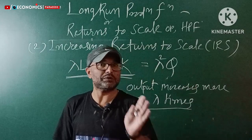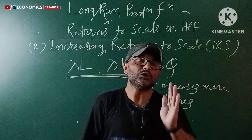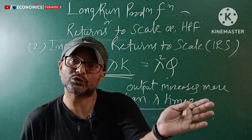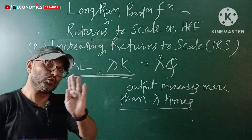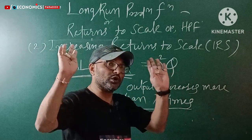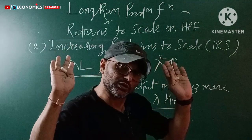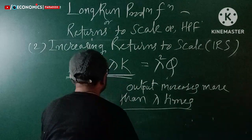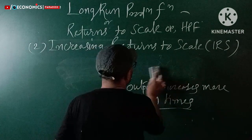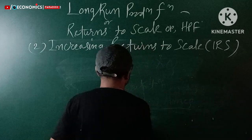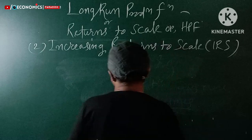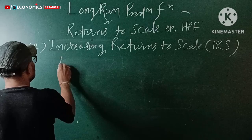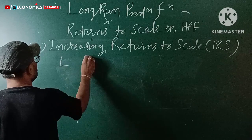So the IRS concept means: if factors increase by lambda times at the same rate, the output increment will be more than lambda times. Because it is a long-run production function, both factors — labor and capital — change together.